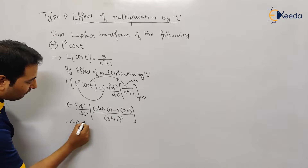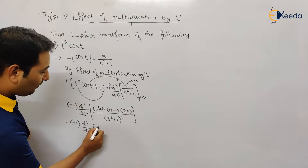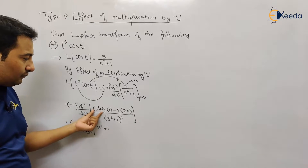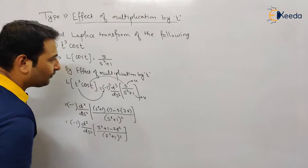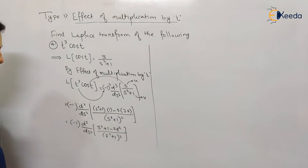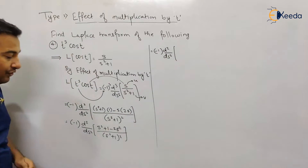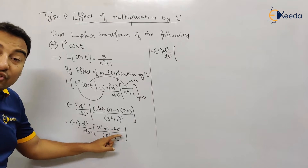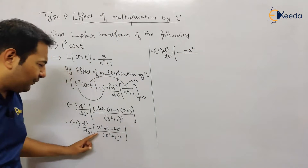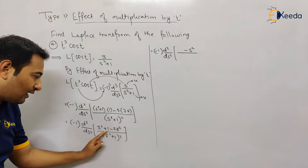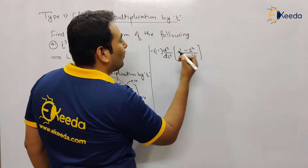Let us simplify because we need to find two more derivatives. This becomes (s²+1) minus 2s², all over (s²+1)², which simplifies to (1−s²)/(s²+1)². We now have minus one outside and d²/ds² still to apply.